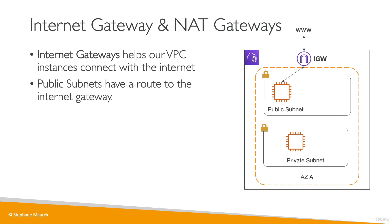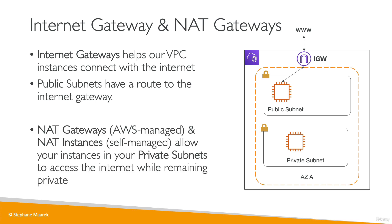If you have an instance in a private subnet, it is not accessible from the internet, but you may want to give it internet access — for example, to get OS updates or download files. We can create a NAT gateway, which is managed by AWS, or a NAT instance, which is self-managed. That allows instances in your private subnet to access the internet while remaining private. We create the NAT gateway in the public subnet, add a route from the private subnet to the NAT gateway, and from the NAT gateway to the internet gateway — this gives your private subnet internet connectivity.